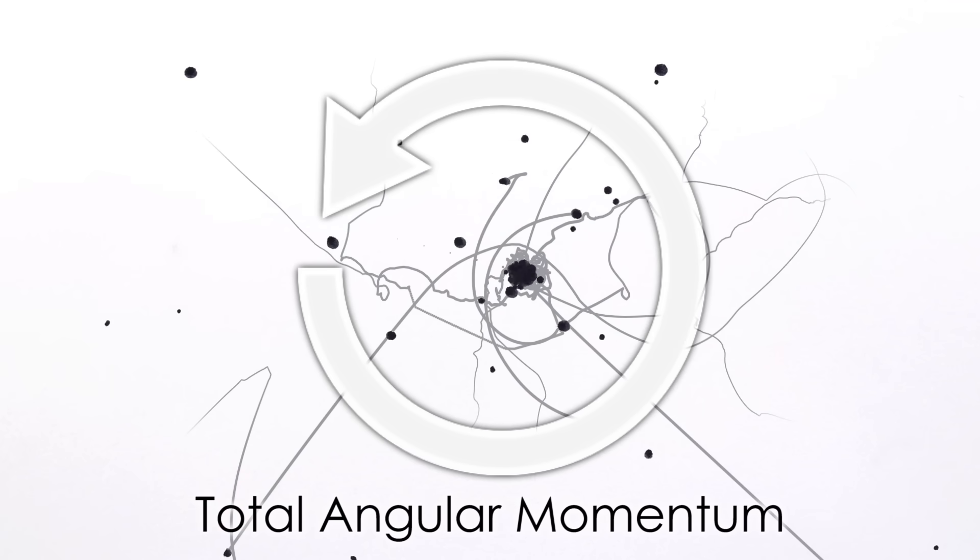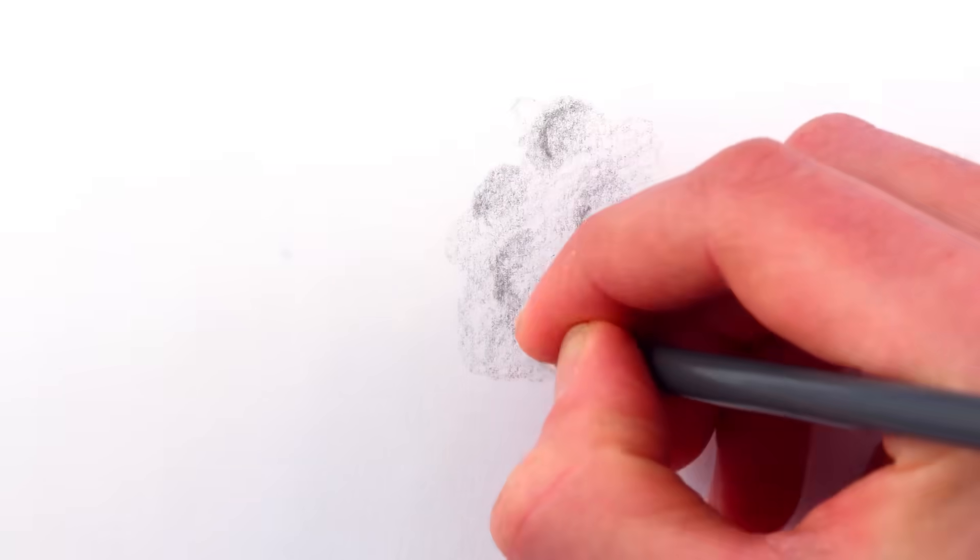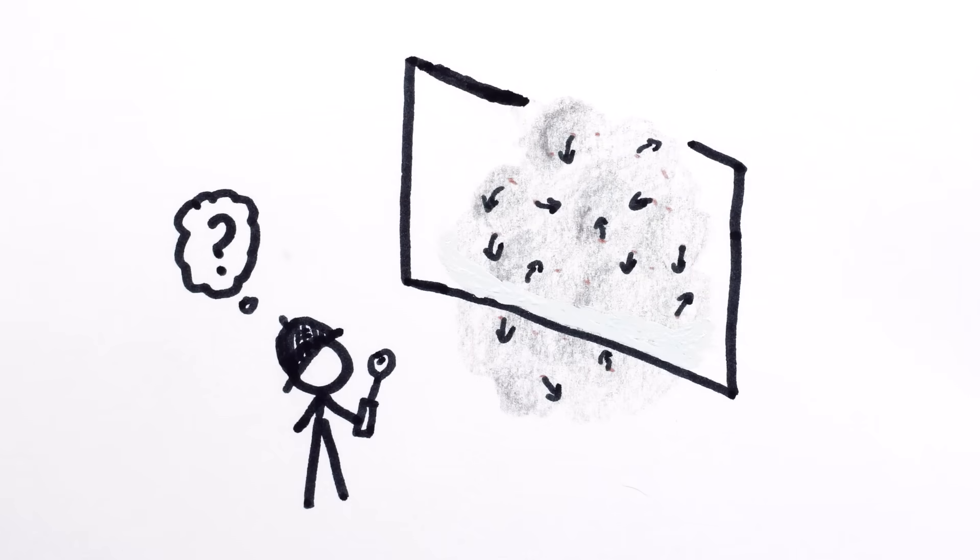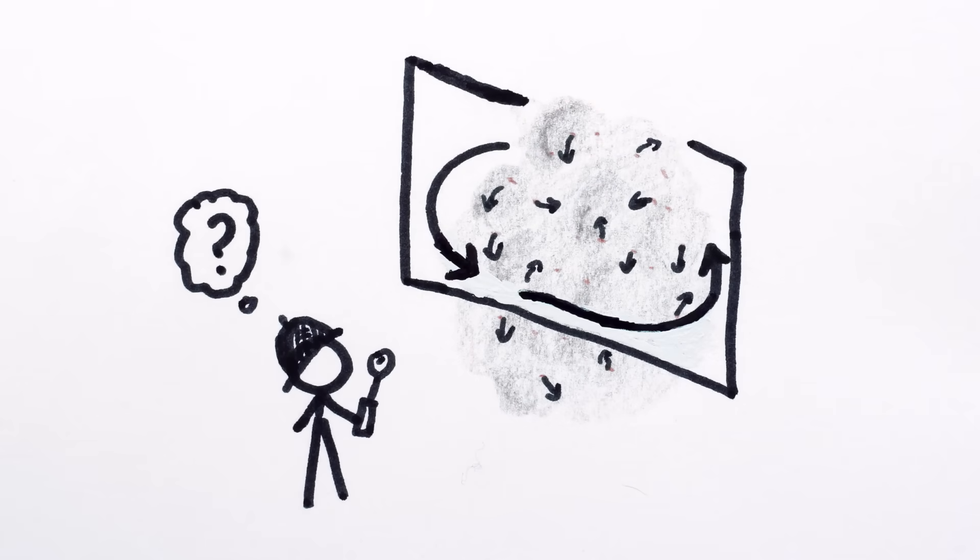And yet collected together they have a single total amount that they spin about their center of mass. It may be hard to figure out exactly what direction that rotation is in, but the mathematics implies there must be some plane in which the cloud, taken as a whole, spins.